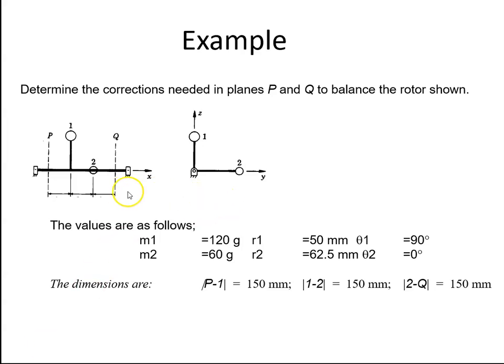In this example we're asked to determine the corrections needed in planes P and Q, here and there, to balance the rotor shown. We have a motor here with a mass of 120 grams. The radius, so this distance here, is 50 millimeters and this distance here is 62.5 millimeters.